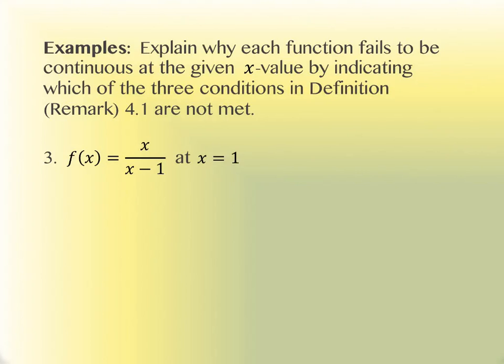On this slide we're asked to explain why the function fails to be continuous at a given value and which of the conditions are not met. What's going to go on in this function that causes it to be discontinuous at x equals 1? It'll give me a zero in the denominator, which means one of two things is happening. When you get a zero in the denominator, what are the two possibilities?